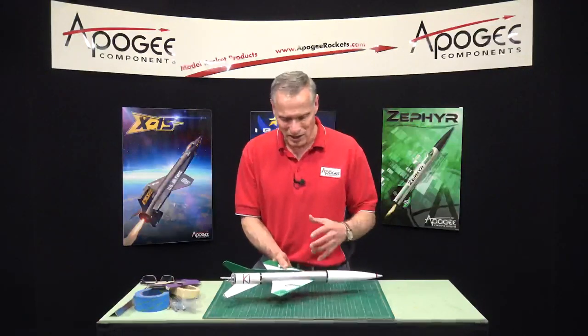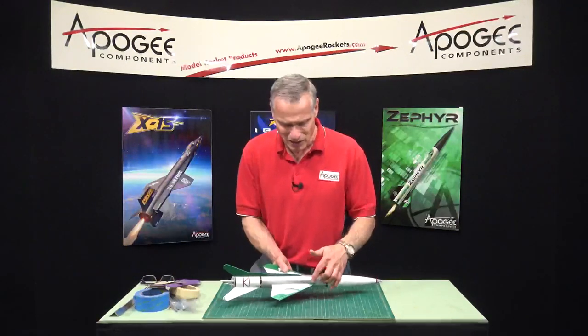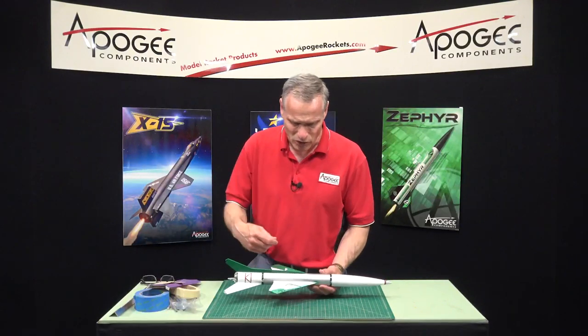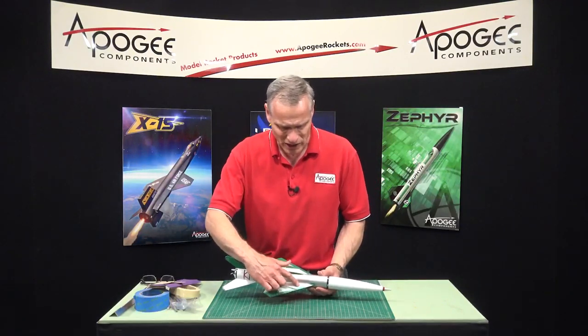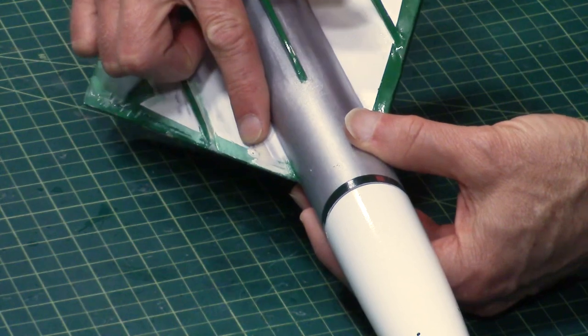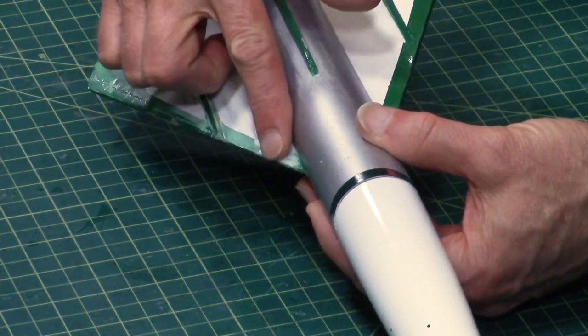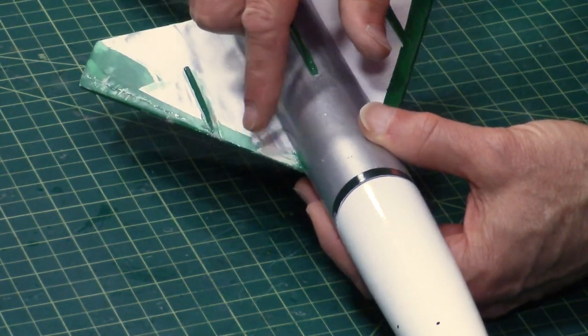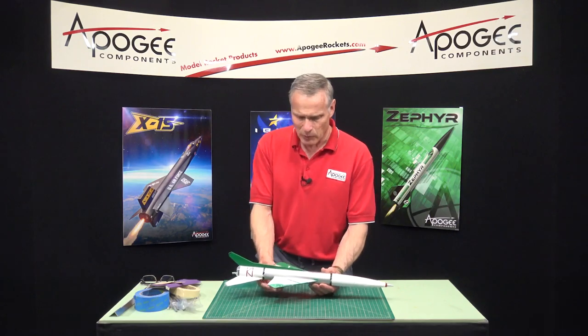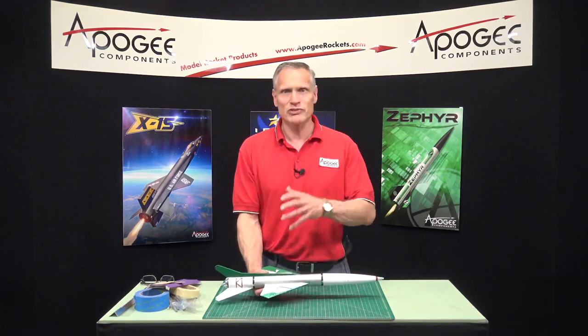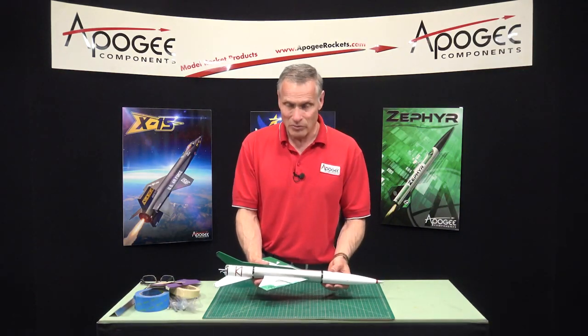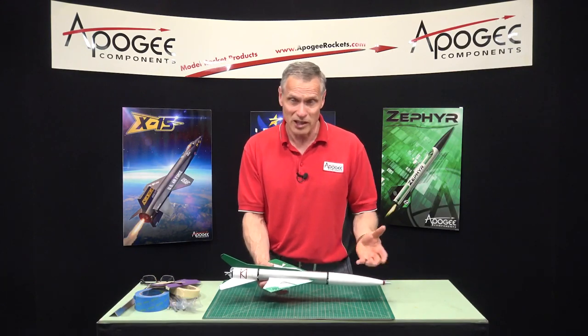So they started sanding it down and they used a wood dowel. You can see in this area they got too deep and now they're into the balsa wood. At that point they pretty much said I give up, I need help.